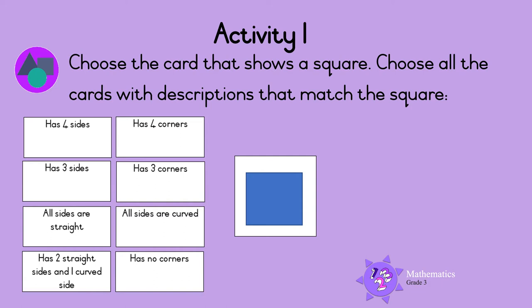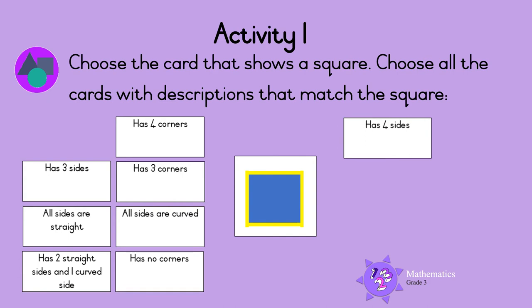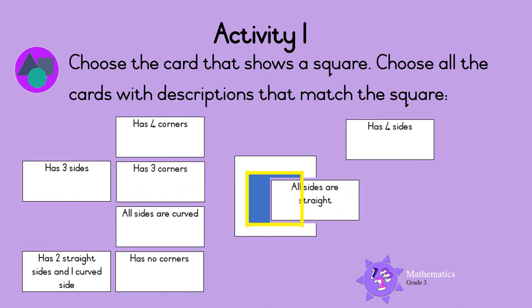Count the number of sides: 1, 2, 3, 4 sides. So the square has 4 sides. Are the sides straight or curved? Can you see that all the sides are straight? So all the sides of a square are straight.